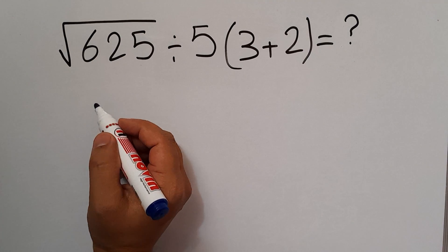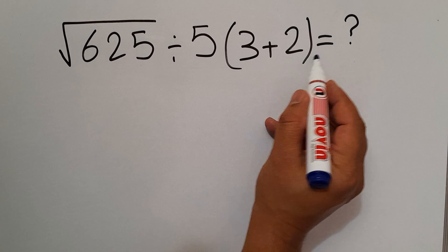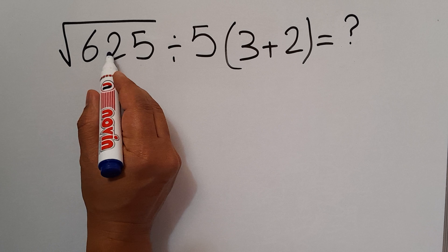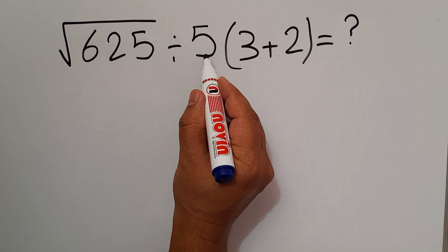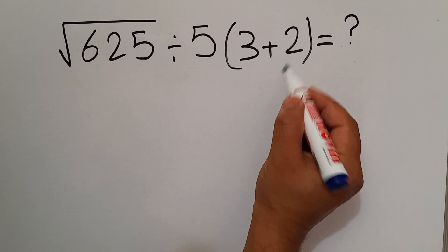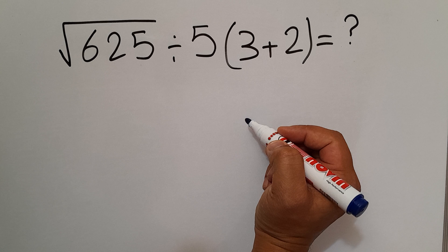Hey guys and welcome to this video. In this video we want to find the value of this expression: square root of 625 divided by 5 times 3 plus 2. Are you ready to solve? Let's go ahead and get started.